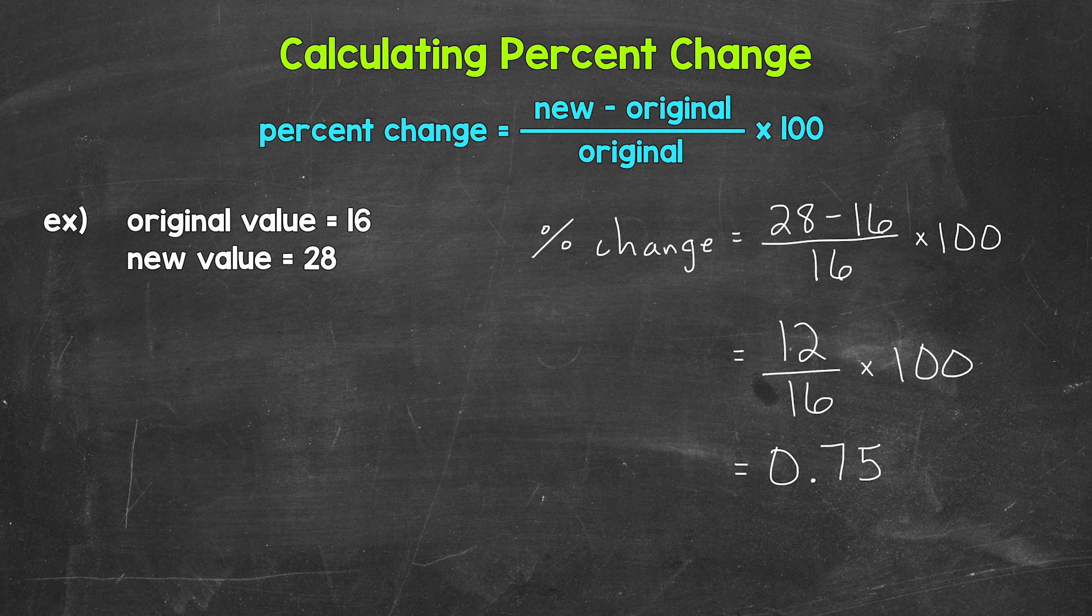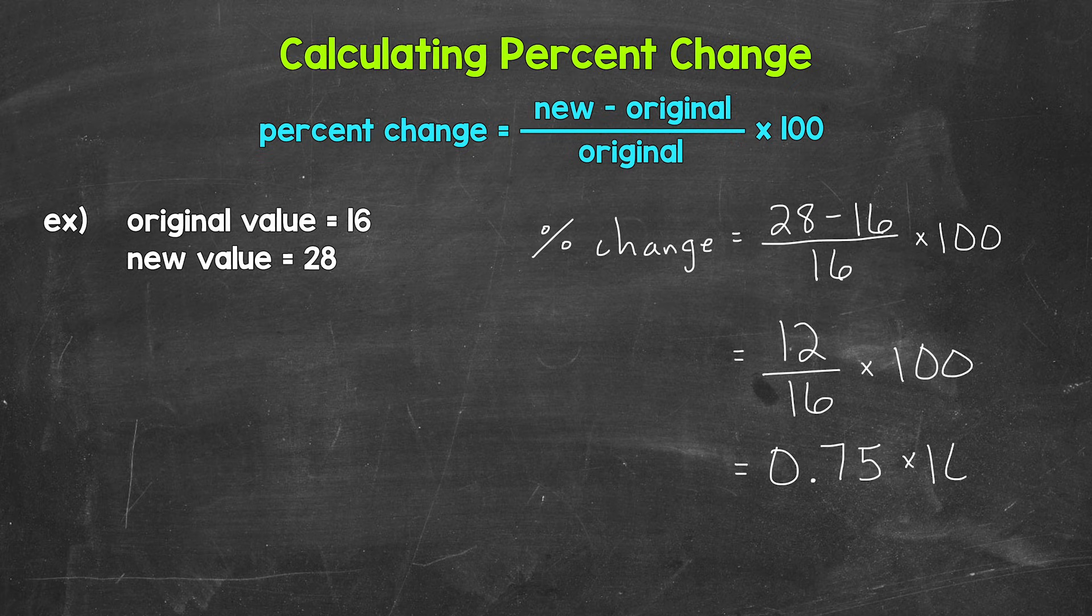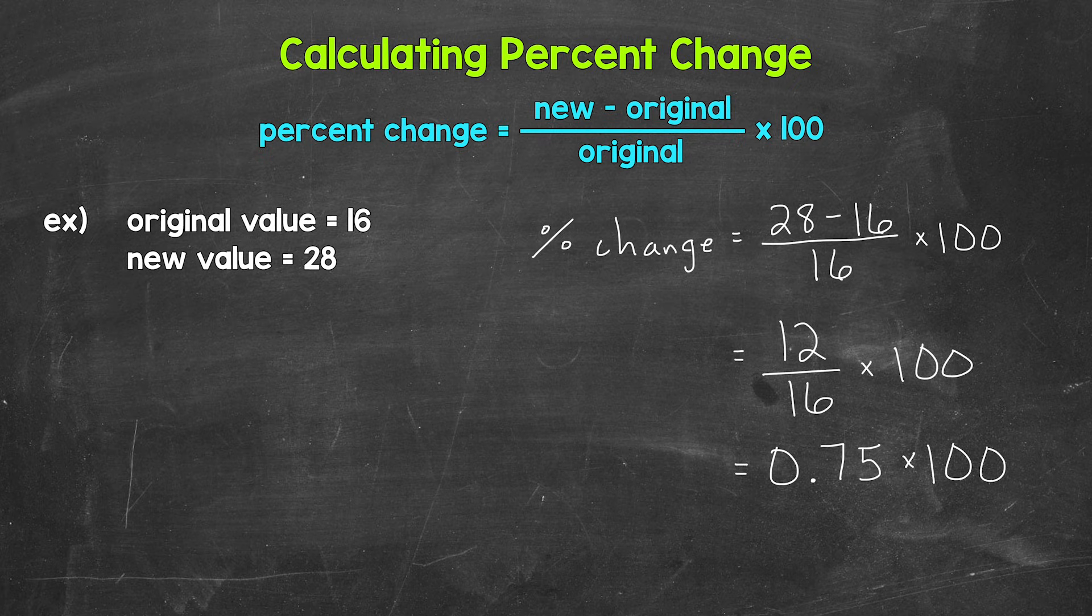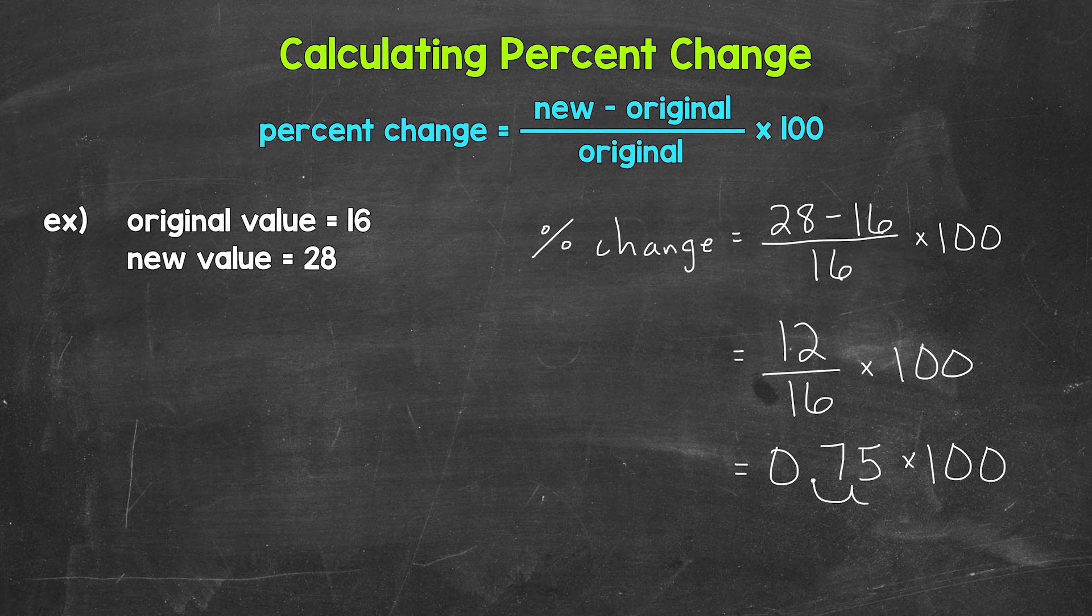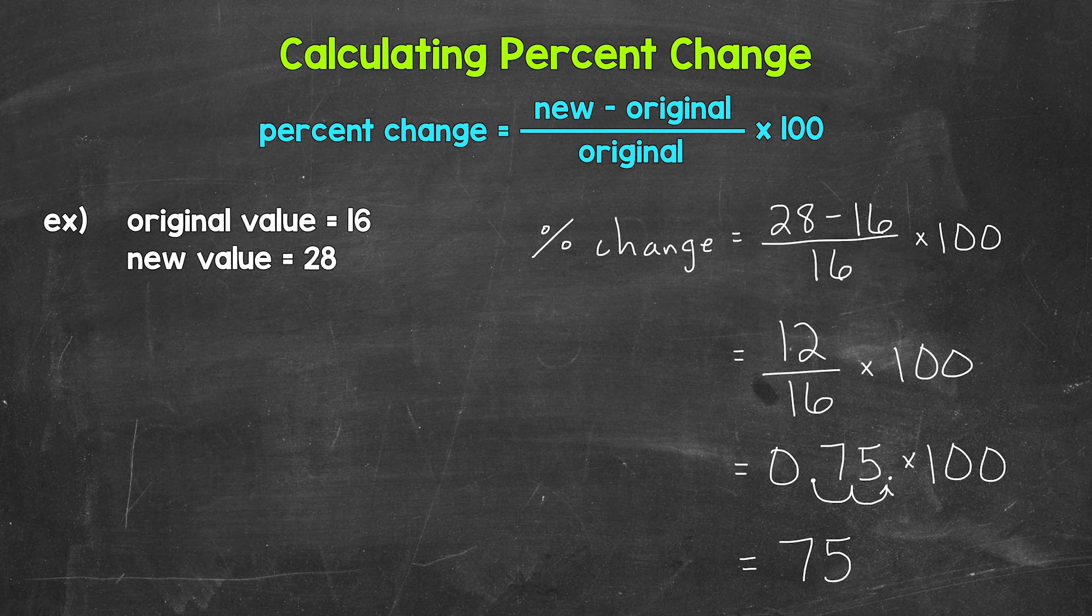And we need to multiply that decimal by 100 in order to convert it to a percent. Now a quick way to multiply by 100 is to move the decimal twice to the right. So once, twice to the right, and that gives us 75 percent.